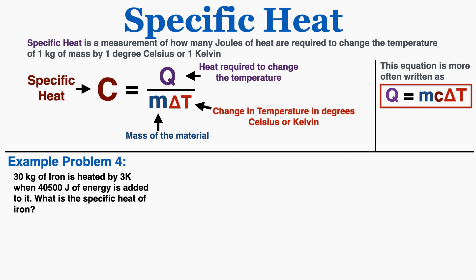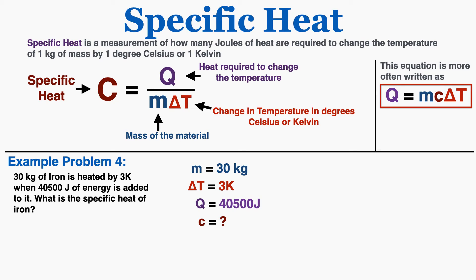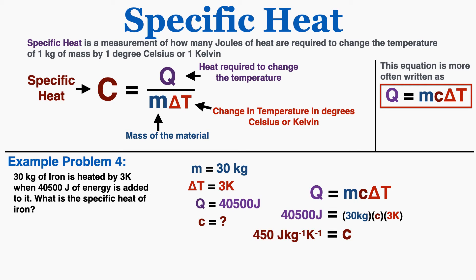In example problem four, 30 kilograms of iron is heated by 3 Kelvin when 40,500 joules of energy is added to it. What is the specific heat of iron? We have the mass, the change in temperature — and remember the equation works whether we use Kelvin or Celsius because the changes are the same on both scales — and the heat added is 40,500 joules. Using Q = MCΔt and isolating C gives a final answer of 450 joules per kilogram Kelvin.